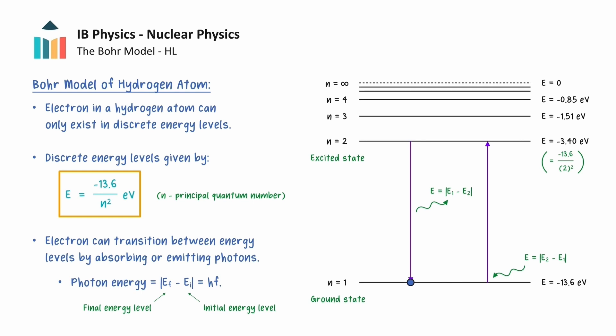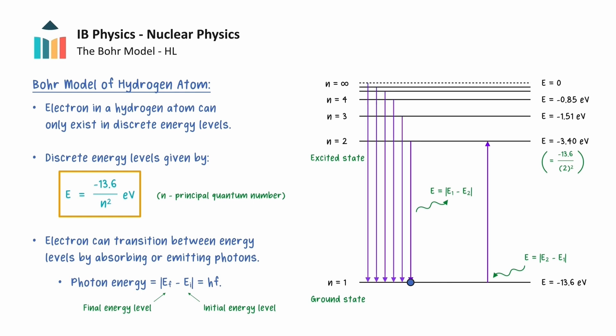All transitions down to the ground state have high energy and will produce photons of ultraviolet radiation. The next set of transitions down to the level n equals 2 will produce photons of visible light. Then transitions down to the level n equals 3 result in photons of lower energy infrared radiation.